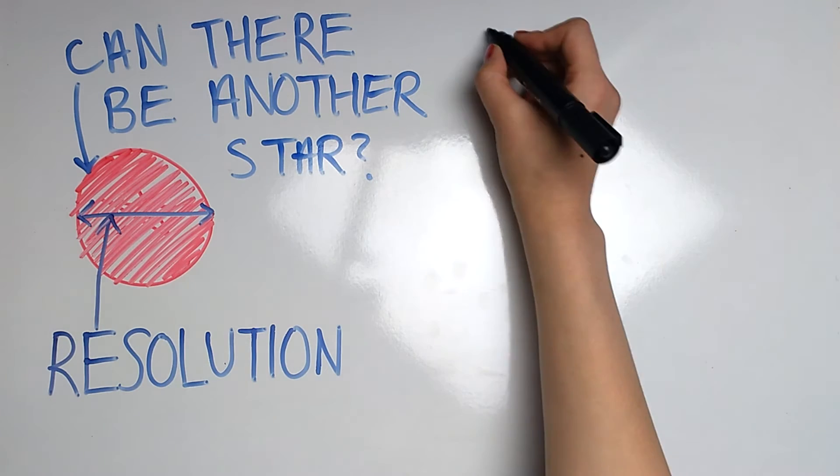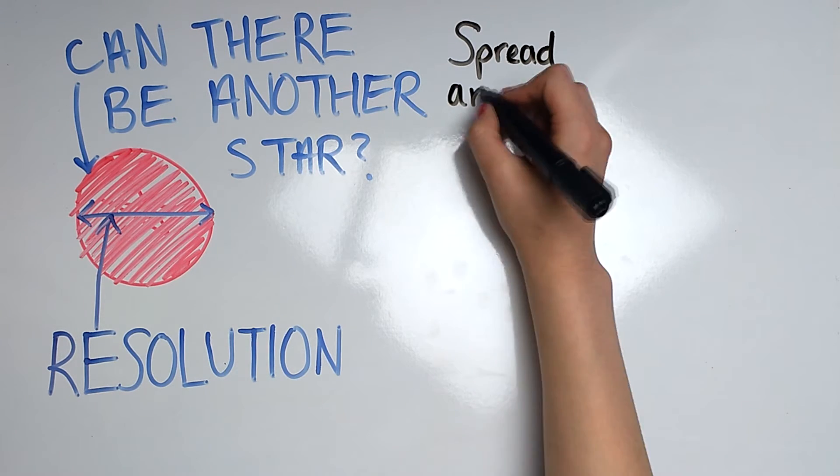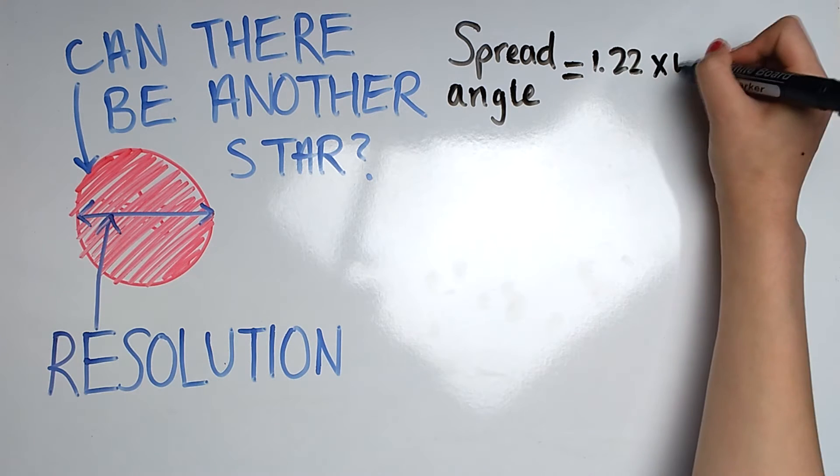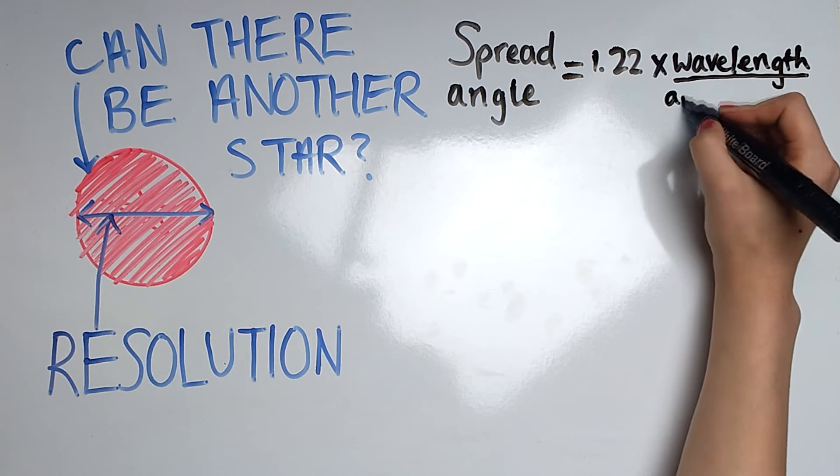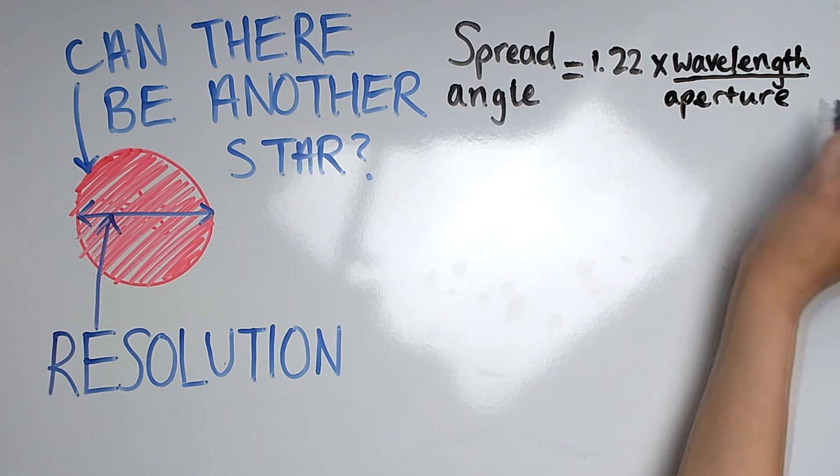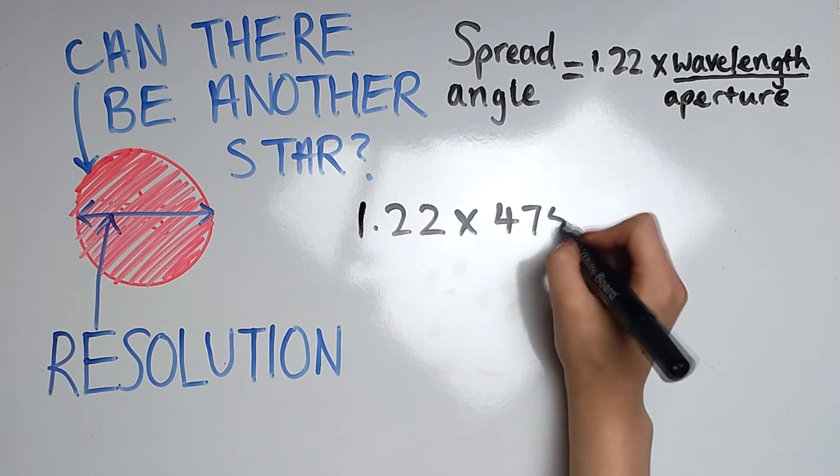To calculate the resolution of any telescope, we need a simple formula. The minimum resolvable angle is directly proportional to the wavelength of light used and inversely proportional to the diameter of the primary lens of the telescope, also known as the aperture.